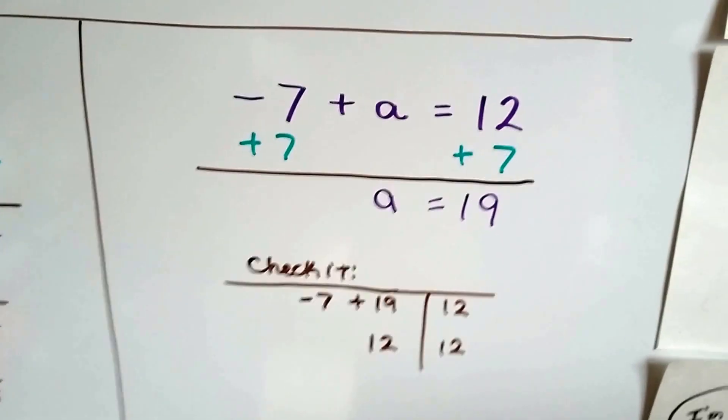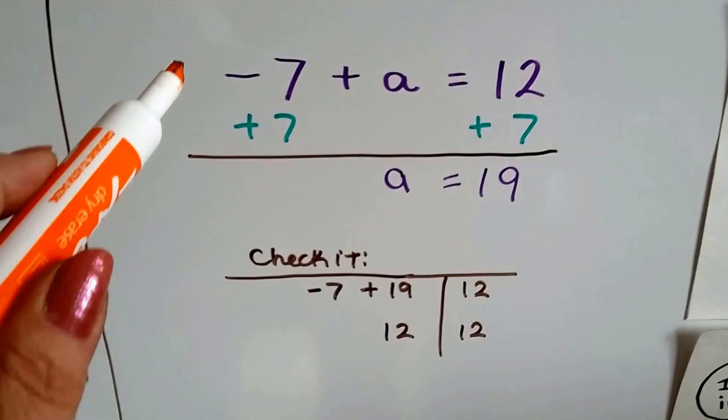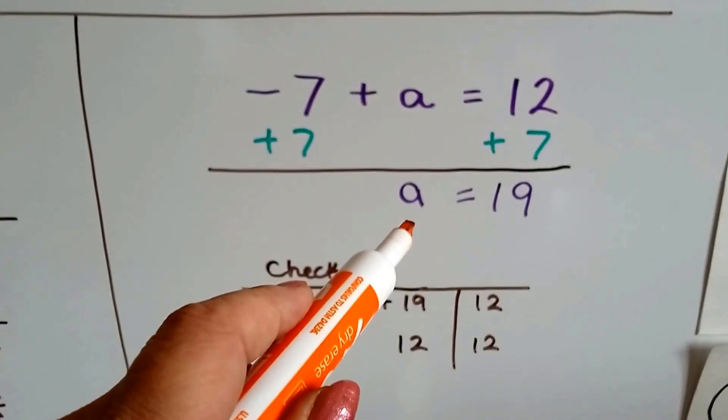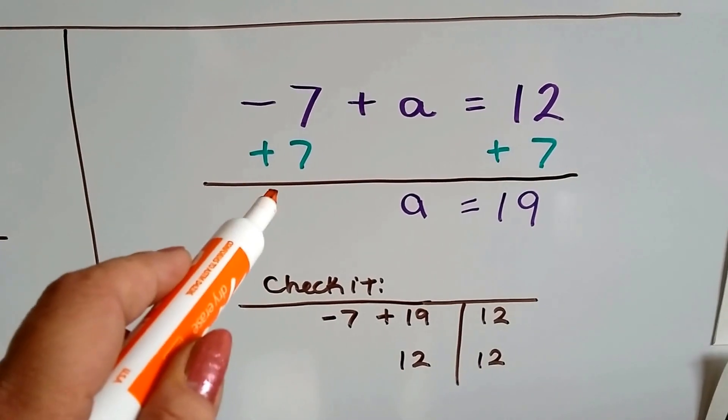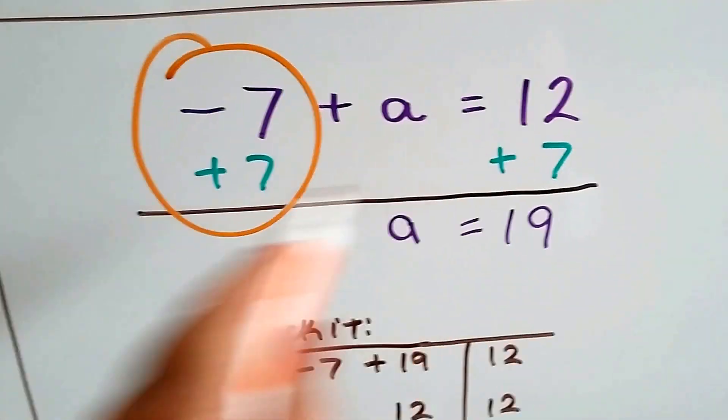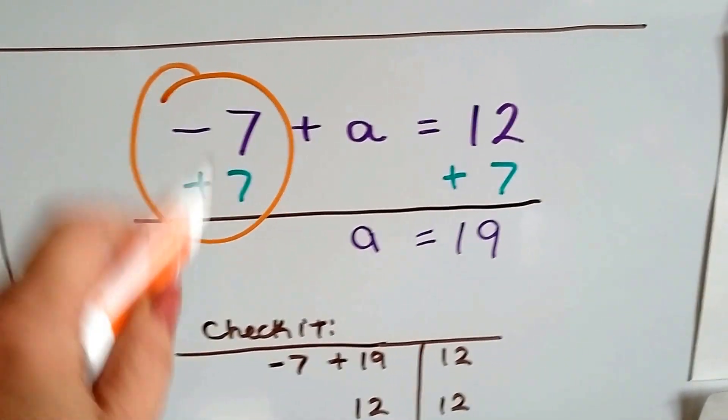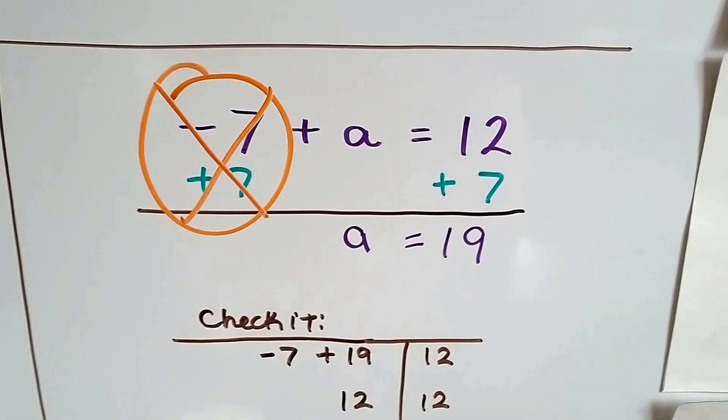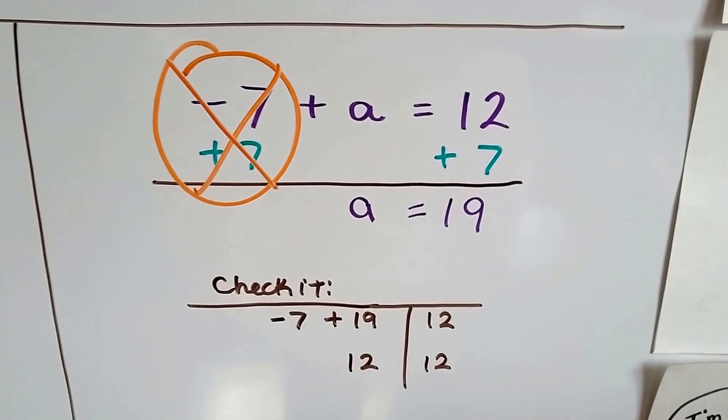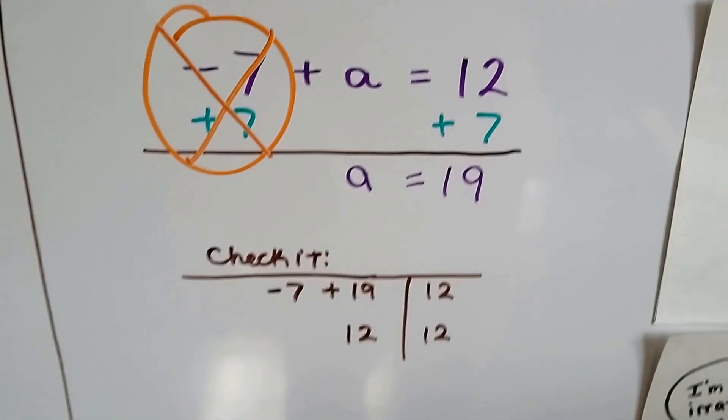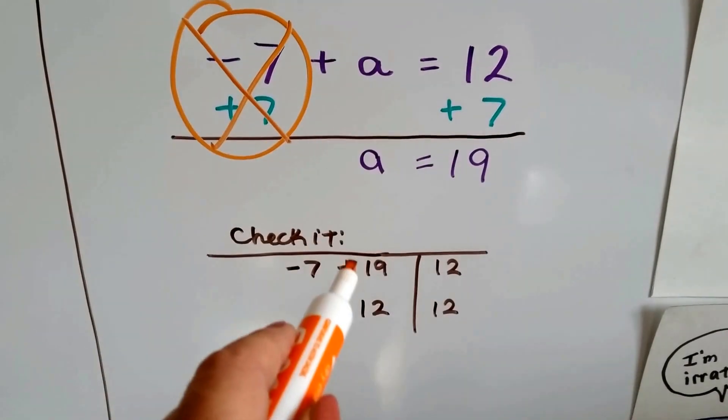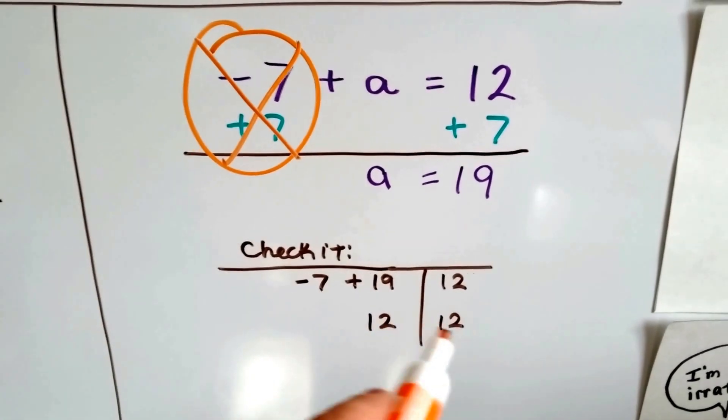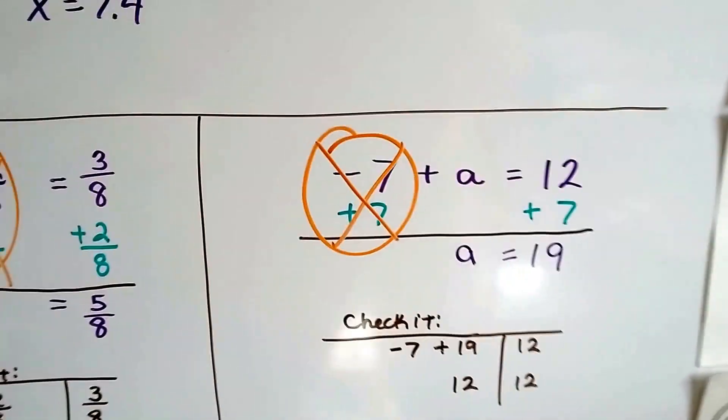So one last time really quick. We've got a negative 7 plus a equals 12. We need to get this a by itself on this left-hand side of the equal sign. And if we have a negative 7, we can add a positive 7 to each side of the equal sign. We have to keep it balanced. And this side creates a zero pair and gets rid of that negative 7, right? That's the additive inverse property. And we end up with a equals 19. And we plug in the 19 for the a in the equation. Negative 7 plus 19 equals 12. Negative 7 plus 19 is 12 on both sides. See? So we know we did it correctly.